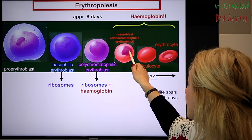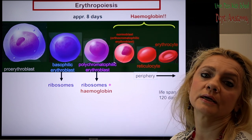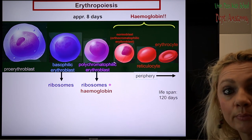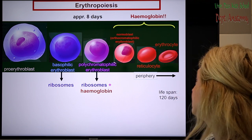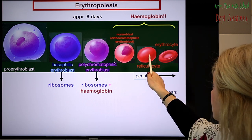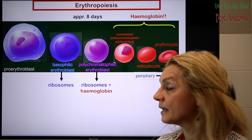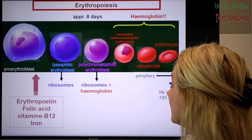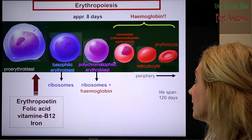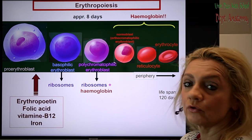In the next step the nucleus will be expelled from the cell, and we reach the almost mature red blood cell — the reticulocyte. Reticulocytes are already sent to the circulation, to the peripheral blood, and within approximately one day it will be a mature erythrocyte. In the blood smear we cannot distinguish these two; I will show you in the next picture how we can distinguish them. Just remember the factors that stimulate red blood cell formation: erythropoietin, folic acid, vitamin B12, and iron.